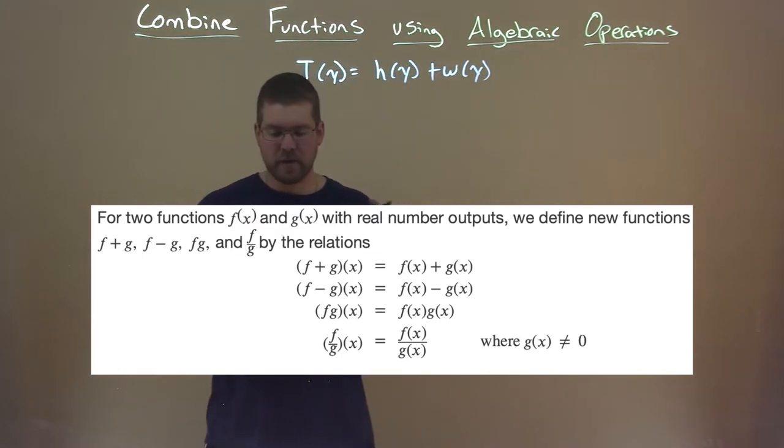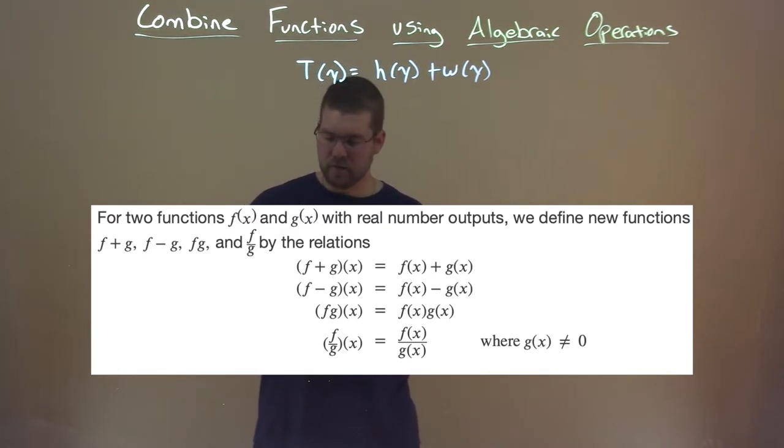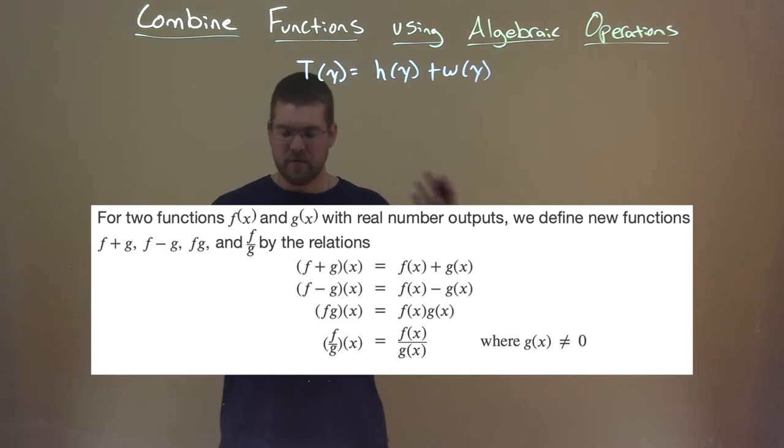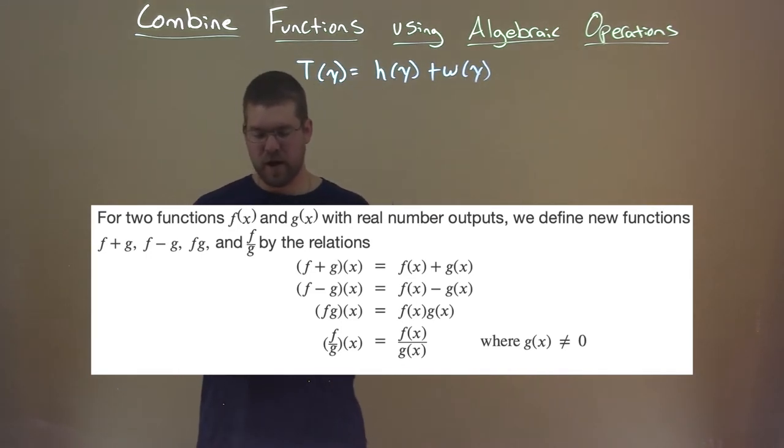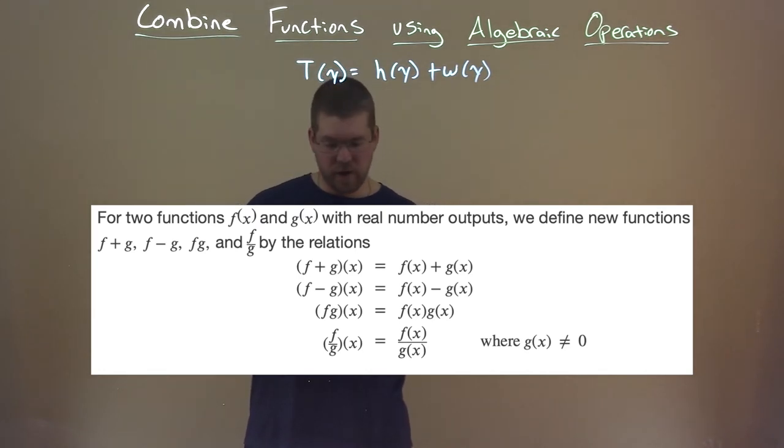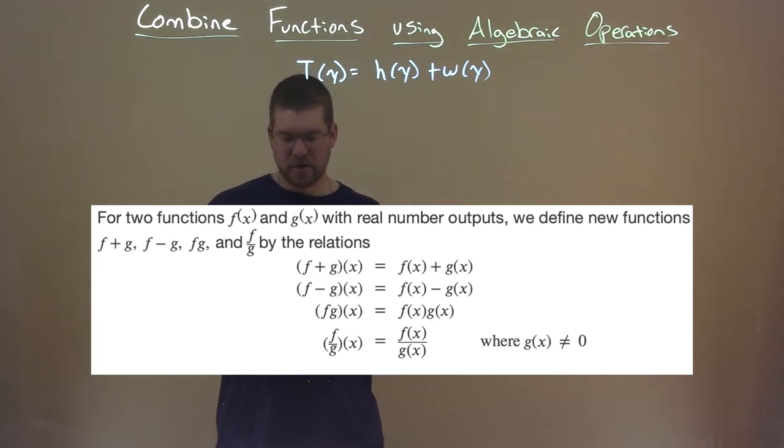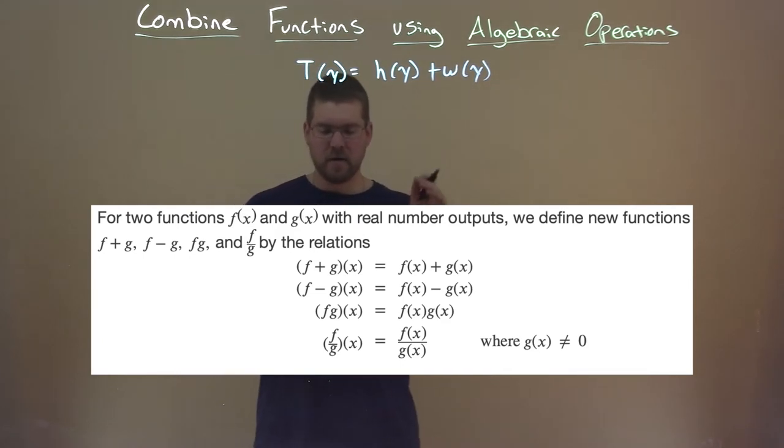f plus g of x is equal to f of x plus g of x. f minus g of x equals f of x minus g of x. f times g of x equals f of x times g of x. And f divided by g of x is equal to f of x divided by g of x, where g of x is not equal to zero.